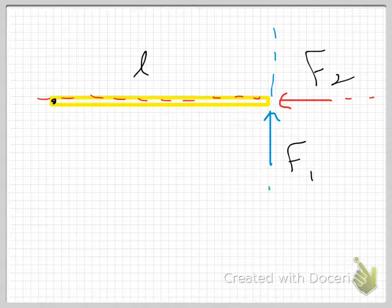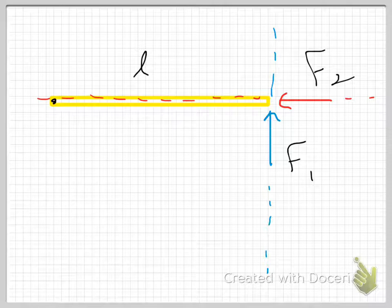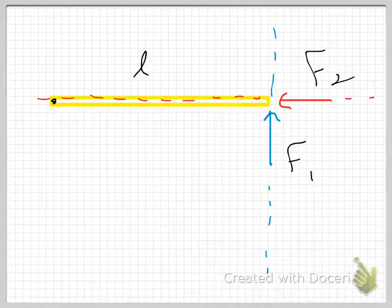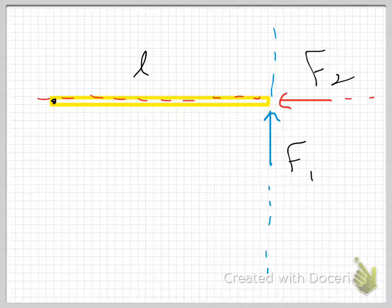The blue line is my line of action of F1; the red is my line of action of F2. Notice that the line of action of F2 passes through the point of rotation. When that is the case, F2 will provide no torque — any force whose line of action passes through the point of rotation provides no torque. F1, however, has a line of action that does not pass through the point of rotation, so it will provide a torque.